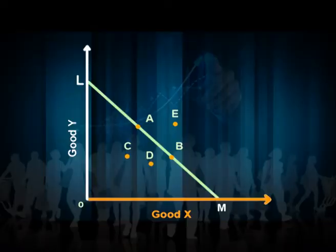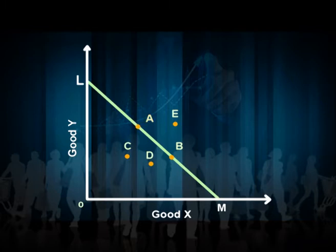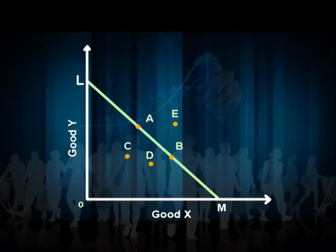Let's understand this with a simple diagram. Good X is shown on the horizontal axis and good Y on the vertical axis. Given income and prices, LM is the price-income curve of the purchaser. The consumer can choose any bundle on or inside the LM curve. The consumer prefers bundle A on the LM curve because combinations C and D are relatively inferior to A, and combination E is beyond the consumer's reach. So bundle A is the revealed preference of the consumer, representing the strong ordering.